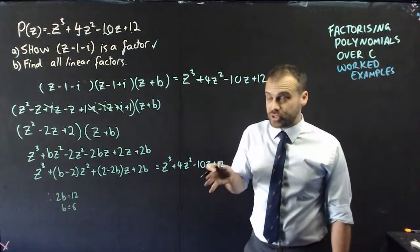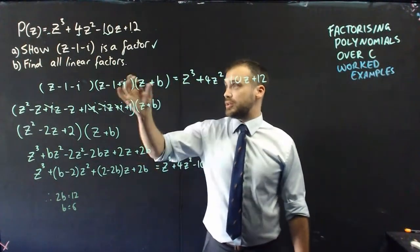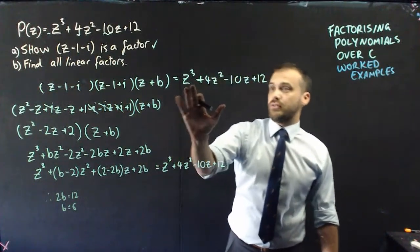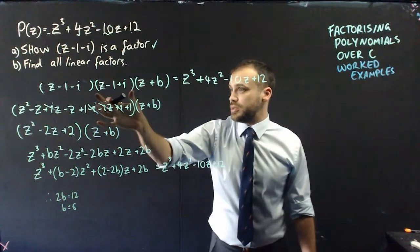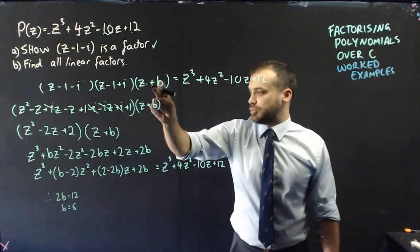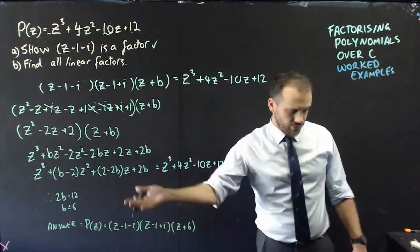And I'm actually finished, because I can now say that the linear factors of this thing, the thing that we started with, is that one, that one, and z plus 6. Finished.